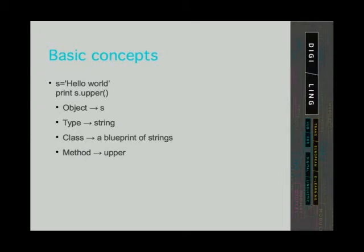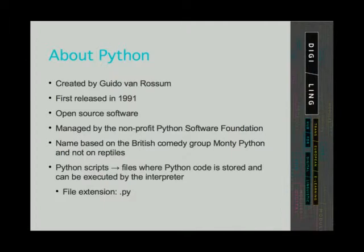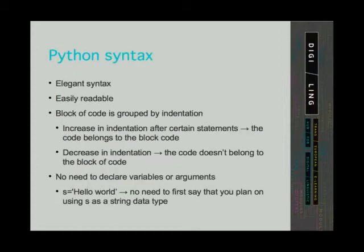Now that we've covered some basic concepts, let's take a look at Python. Python was created by Guido van Rossum, and its first release was in 1991. It is open source software, managed by the non-profit Python Software Foundation and developed by the community. The name Python is not based on reptiles but on the British comedy group Monty Python. Python scripts are files where Python code is stored and can be executed by the interpreter — the file extension for Python files is .py. Python syntax is elegant and easily readable, and code that belongs together is grouped by indentation.